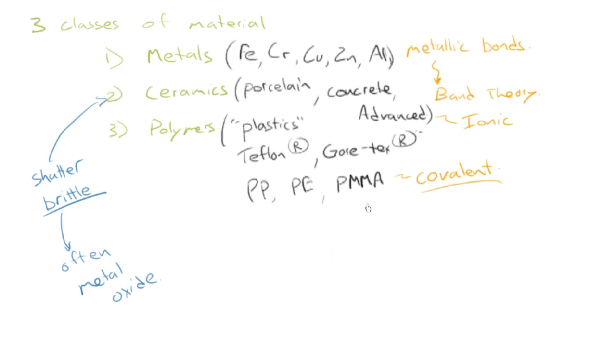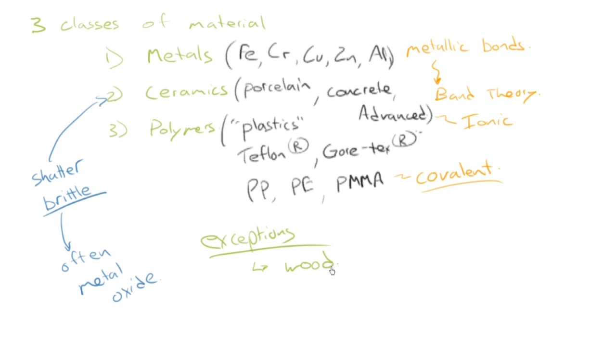So then the last thing I wanted to address is, is this classification scheme thorough? Is it all-encompassing? Is it exhaustive? And the short answer is no. There's certainly exceptions, aren't there? There's exceptions, and you might be able to think of some. Some of the common ones that come to mind are wood. What's wood? Well, wood is made from cellulose, largely, and so in that sense, you could argue that it's a polymer, but it's certainly naturally derived.